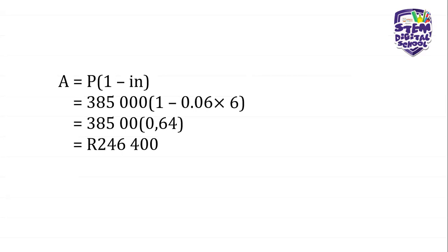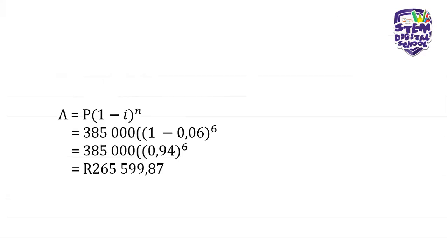With straight line depreciation, i is the coefficient of N — they are multiplied together inside the bracket. With reducing balance, N becomes the exponent. So you subtract 0.06 from 1 to get 0.94, then raise 0.94 to the power of 6 and multiply by 385,000. The result is 265,599.87 rands. That is the value of the car at the end of the six-year period using reducing balance.